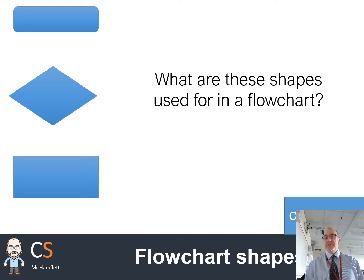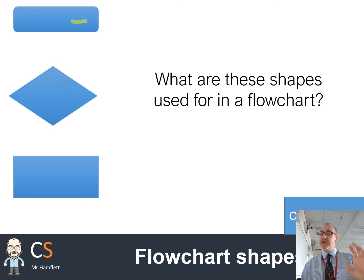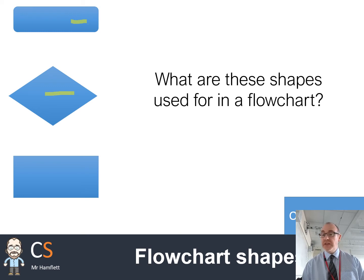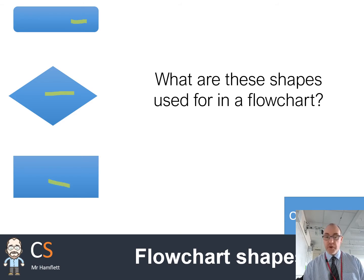So what do these flowchart symbols mean? Have a think first. The first one is start/stop — we use this at the start and the end of our flowcharts. This one here is for making a choice or a decision — it's going to be a question such as 'do you want milk in your tea?' And the final one is an action, something that we do — for example, get a cup, or something along those lines.